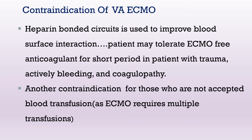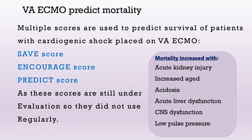Another contraindication is for patients who do not accept blood transfusion, as ECMO requires multiple transfusions. Regarding mortality prediction for VA ECMO, multiple scores — SAVE score, ENCOURAGE score, and PREDICT score — can be used to predict survival in cardiogenic shock patients on VA ECMO, though these are still under evaluation. Mortality increases with acute kidney injury, advanced age, acidosis, acute liver dysfunction, CNS dysfunction, and low pulse pressure.